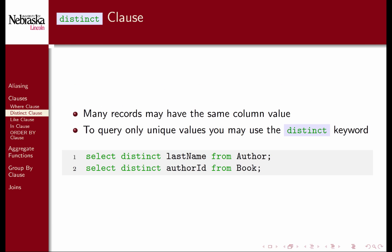You can use the keyword distinct to only retrieve unique values. This first example query would only give unique last names of authors. Even if there were more than one author with the name Smith, Smith would only appear once in our results.